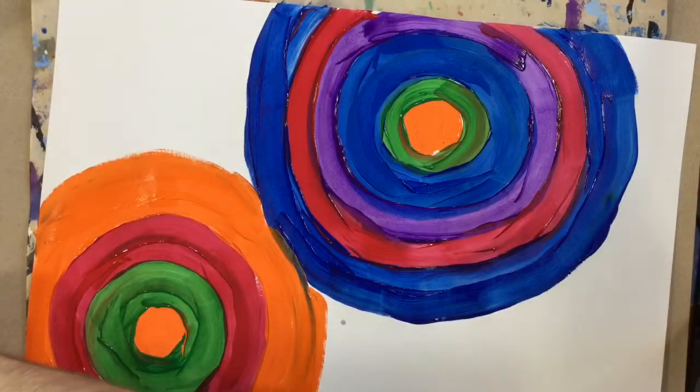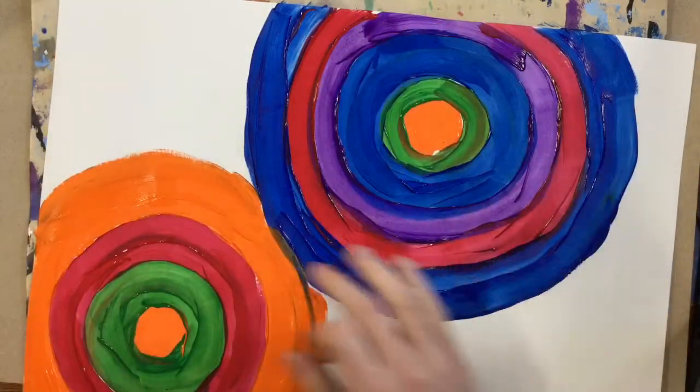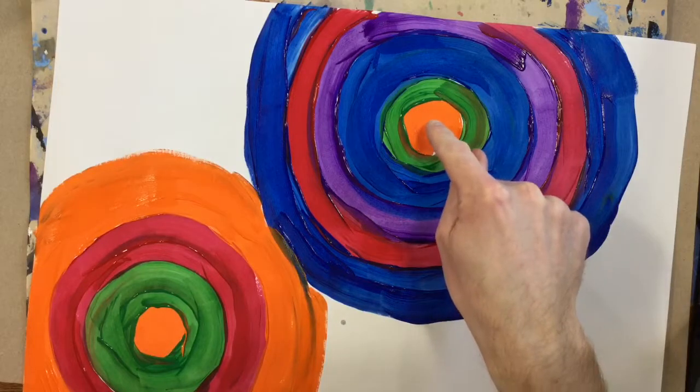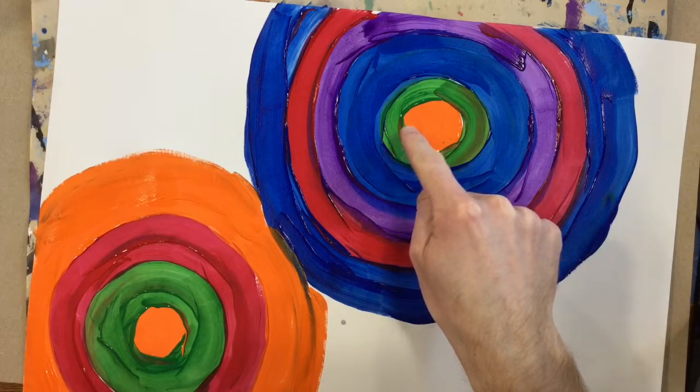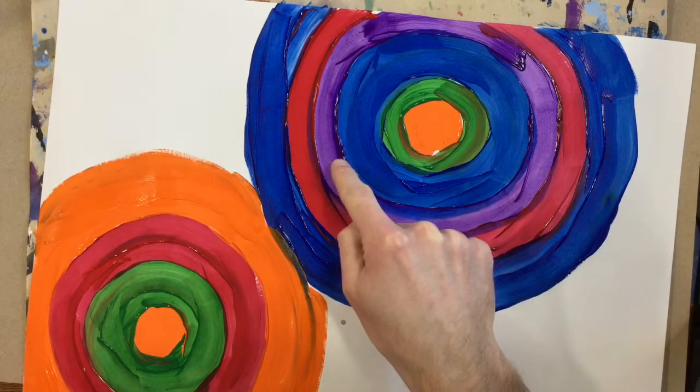When you get about this far, you've got a whole bunch of concentric circles. Remember that's a little circle inside of a little bit bigger circle, inside of a little bit bigger circle, inside of a little bit bigger circle.